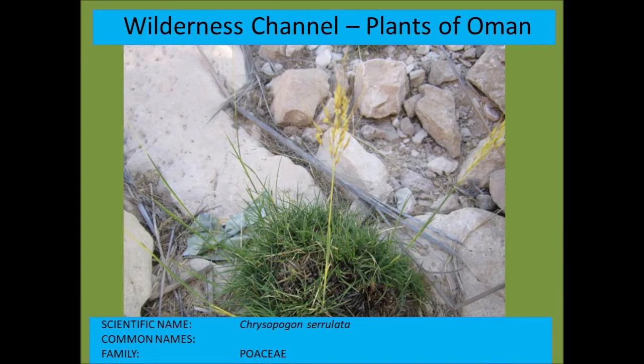Chrysopogon serrulatus is one of the grass species. A number of grass species are quite hard and sharp — for example, many Dactyloctenium species are quite harsh, which discourages grazers.